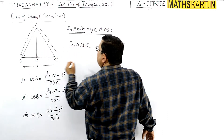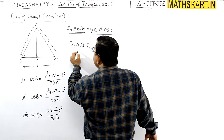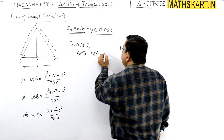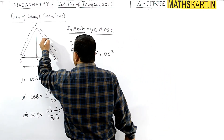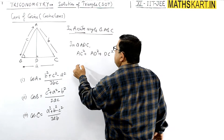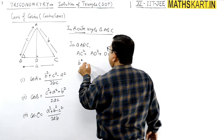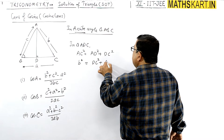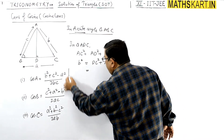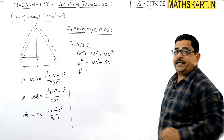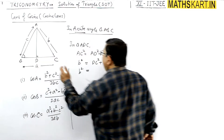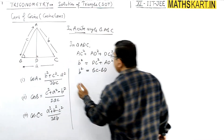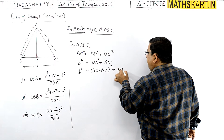In triangle ADC, we can write: AC² = AD² + DC². Now DC can be written as BC minus BD, so DC = BC − BD. Therefore AC² = AD² + (BC − BD)², which expands as BC² + BD² − 2·BC·BD + AD².